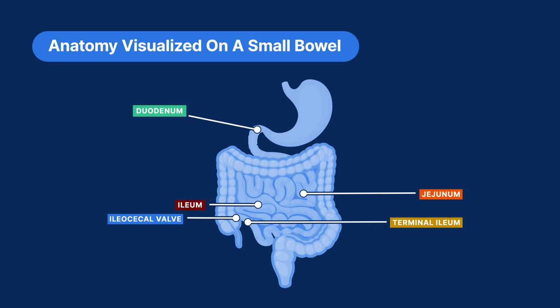Indications for a small bowel follow-through include, but are not limited to, abdominal pain, diarrhea, weight loss, iron deficiency anemia, pre-cap endoscopy, recent bowel surgery, or Crohn's disease, also called regional enteritis.